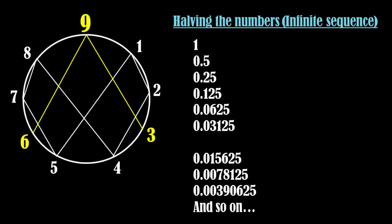Now instead of doubling the numbers, let's half the numbers repeatedly starting from number one. Add all the digits of the number and get the digital root as shown here.